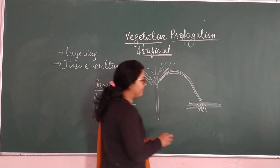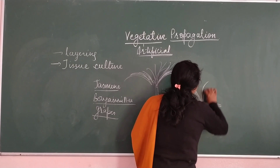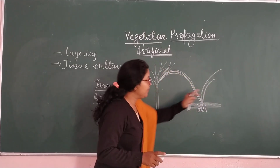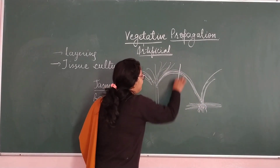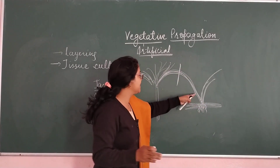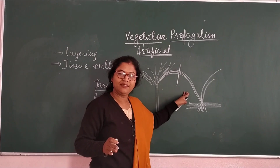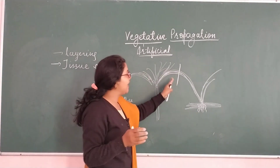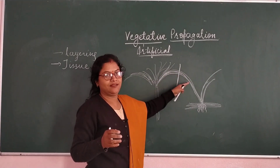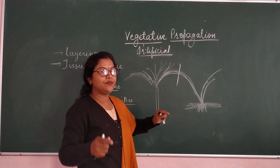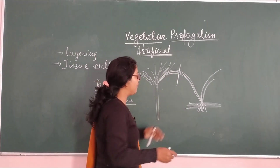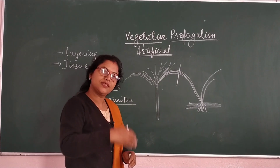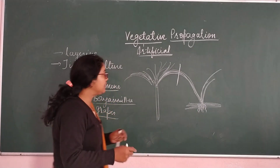At the same time when the roots develop, a new branch arises from that part. When the new branch arises, they cut this plant and divide it from the mother plant — they separate the two plants.